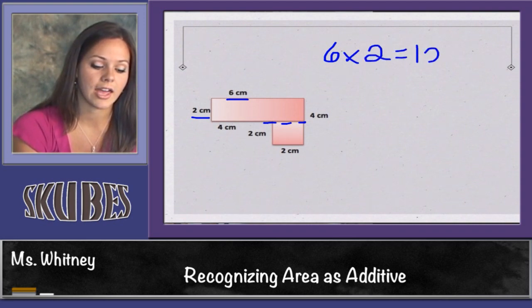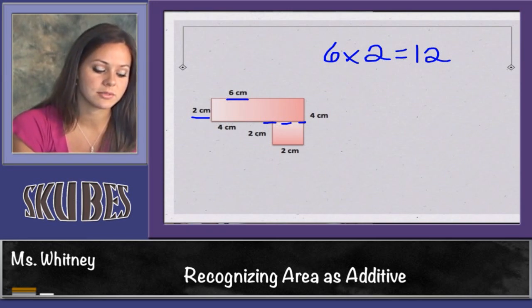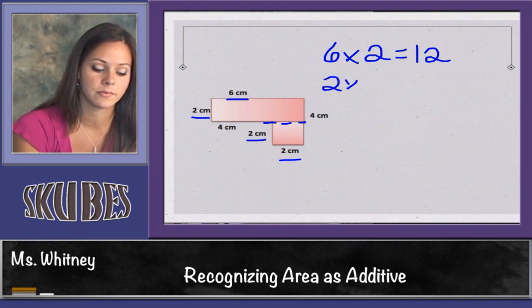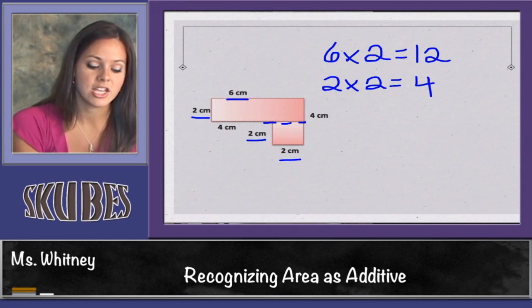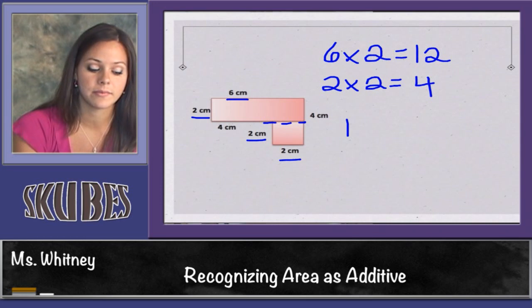Now I can multiply 2 times 2 and get 4, so I know the bottom part is 4.